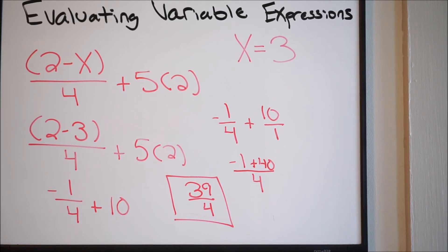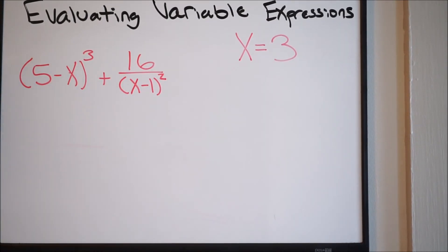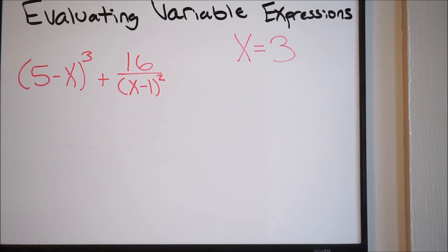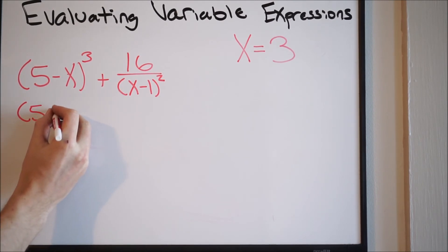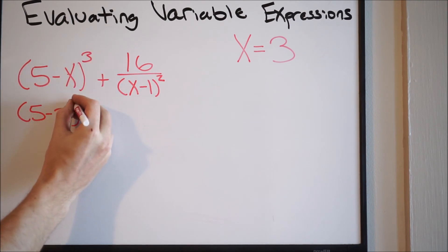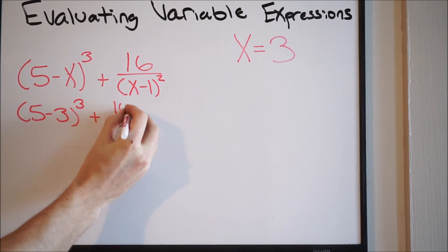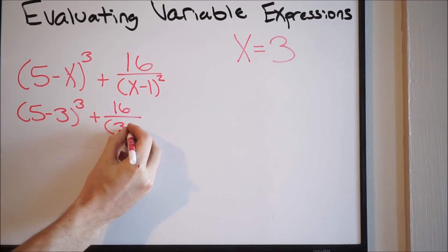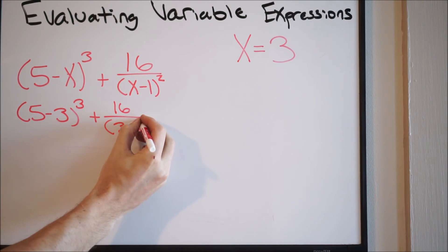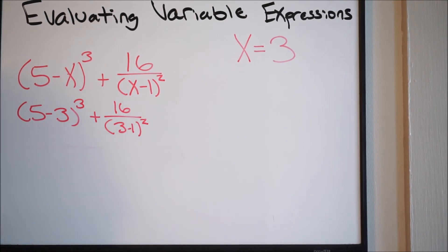Let's try one more example — this will be the last one. We have an expression, and wherever we see an x, we're going to plug in a 3. So let's rewrite this. We'll have (5 minus 3) cubed, plus 16 over (3 minus 1) squared. Let's go ahead and do our order of operations — we want to work what's inside the parentheses first. We have parentheses here and here, so let's take care of those operations.